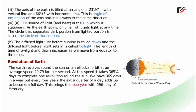The Earth revolves around the Sun on an elliptical orbit at an average speed of 29.79 km per second. At this speed, it takes 365¼ days to complete one revolution. We have 365 days in a year, but every 4 years the extra quarter of a day adds up to become a full day, bringing the leap year with the 29th day of February.